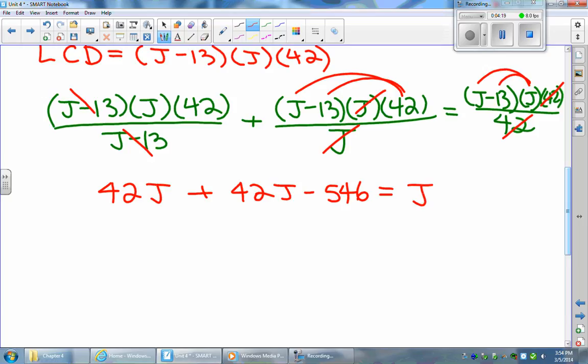And this is all equal to j times j minus 13, which is going to give us j squared minus 13j. Now because this is quadratic with a degree of 2, we need to get everything to one side so that we're left with zero on the opposite side. So I'm going to first combine my like terms: 42j and 42j is 84j minus 546 is equal to j squared minus 13j.